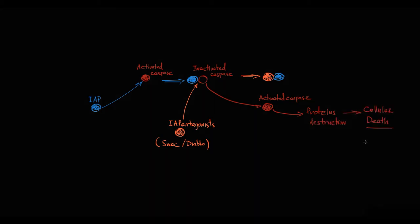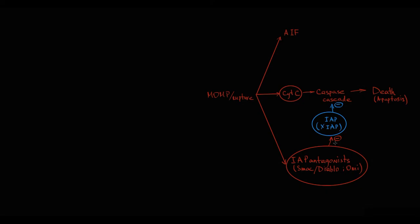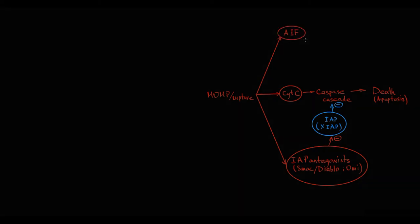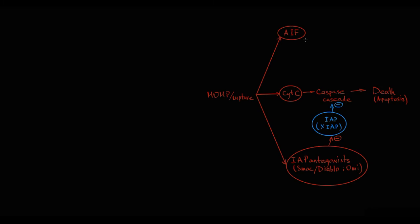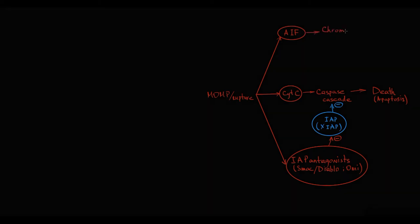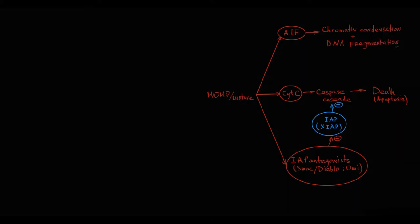So basically, IAP antagonists function as inhibitors of inhibitors of apoptosis proteins. The third substance released into the cytosol is apoptosis-inducing factor (AIF). Once AIF is released into the cytosol, it moves to the nucleus and signals that the cell is dying. In response, the nucleus induces condensation of chromatin and fragmentation of DNA molecules. So apoptosis-inducing factor essentially prepares the cell for death.